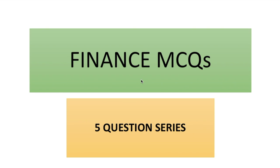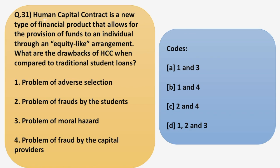Starting with the first question for today: a human capital contract is a new type of financial product that allows for the provision of funds to an individual through an equity-like arrangement. What are the drawbacks of HCC — that is, human capital contract — when compared to traditional student loans? If you do not know the meaning of human capital contract, don't worry, because today we are going to discuss what HCCs are and compare them with traditional student loans.